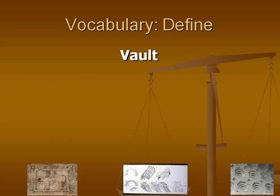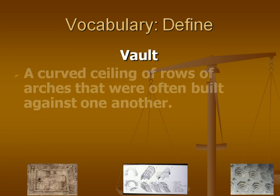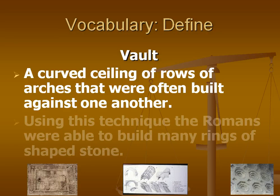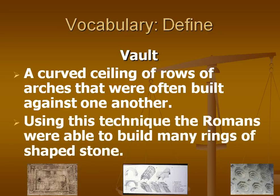A vault is a curved ceiling made up of rows of arches that were typically built against one another. You can see an example of a vault in the pictures below. Using this technique, the Romans were able to build many rings of shaped stone.